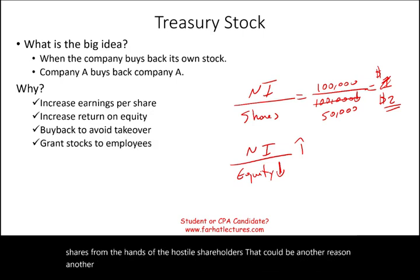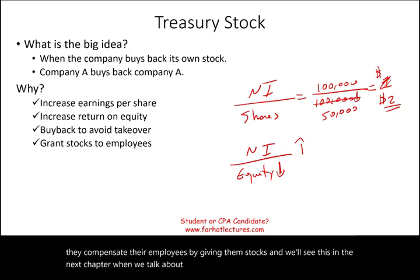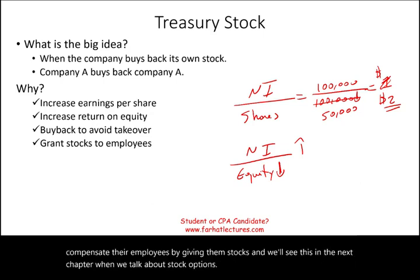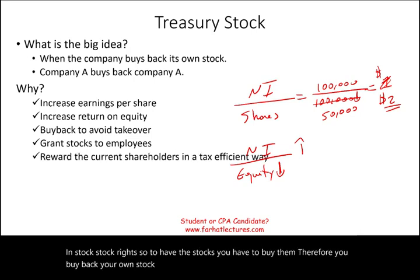Another reason could be to grant stocks to employees. Companies sometimes compensate employees by giving them stock — we'll see this in the next chapter when we talk about stock options and stock rights. To have the stocks available to grant, you have to buy them back first.